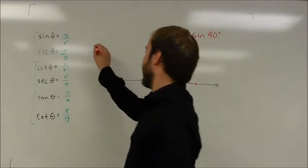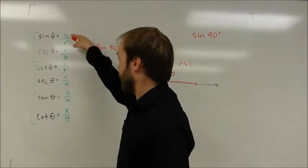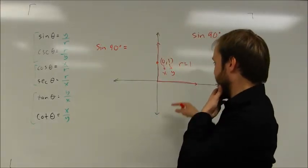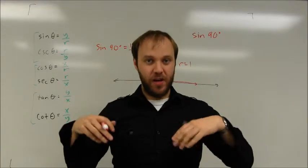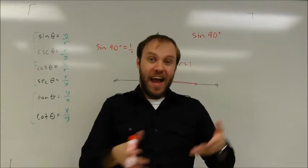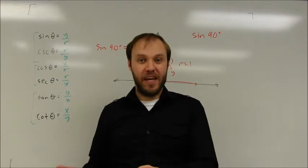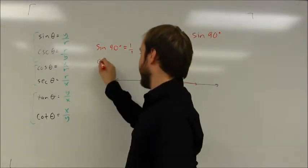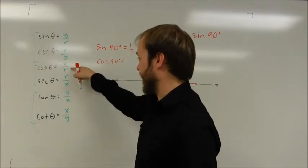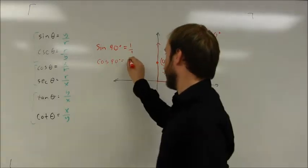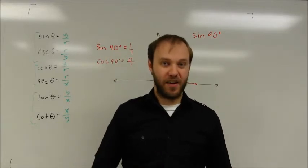So the sine of 90 degrees, well, sine is just defined as being y value over the radius. So the y value over the radius, in this case, is going to be one over one, which of course is just equal to one. So sine of 90 is equal to one. I couldn't find that using the old setup of using right triangles. But I can find that value if I use these definitions. If I want to find the cosine of 90 degrees, cosine is the x value over the r. So that's zero over one, which of course is just zero. So cosine of 90 is equal to zero. And you can check that on your calculator.